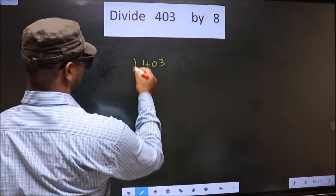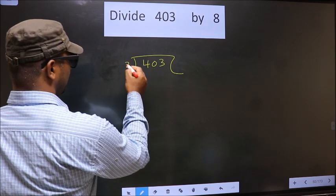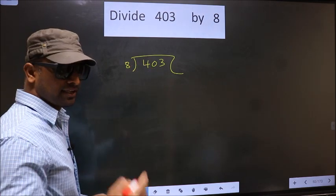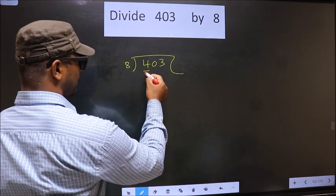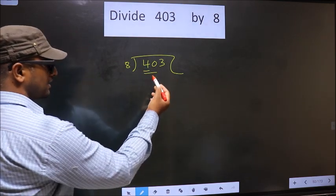403, 8 here. Now here we have 4. 4 is smaller than 8, so we take two numbers, that is 40.